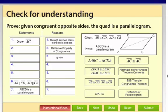We're going to prove, given congruent opposite sides, a quadrilateral is a parallelogram. We're given that segments AB and CD are congruent, and that segments AD and CB are congruent. Our goal is to prove that we have a parallelogram, and we're going to use the definition of a parallelogram that says both pairs of opposite sides are parallel.